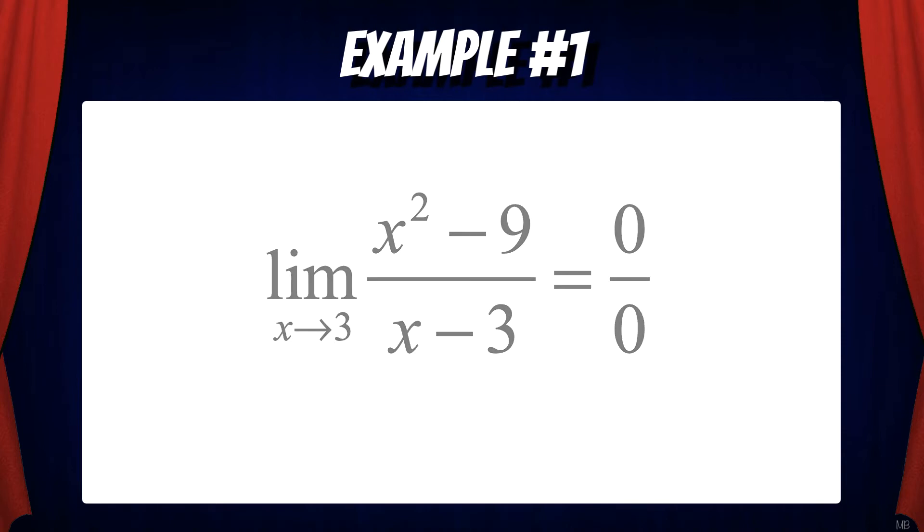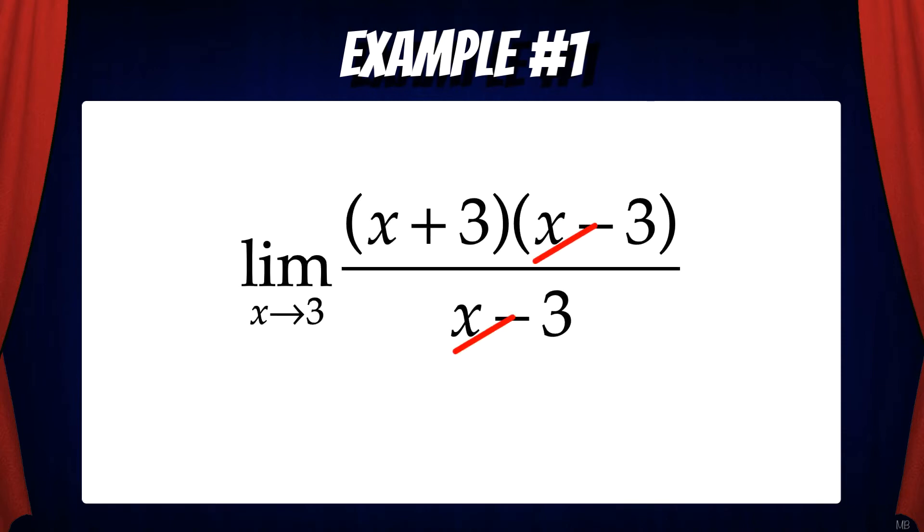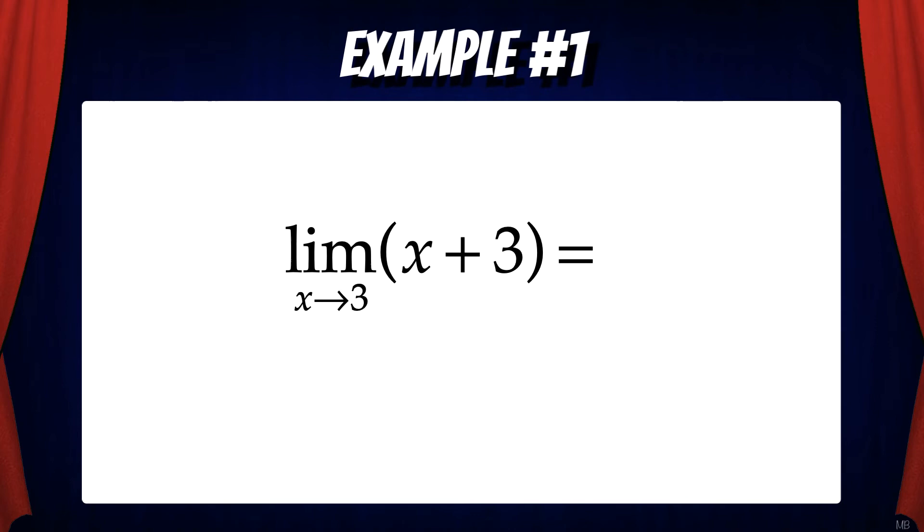That means we have algebra to do. So let's factor the numerator and cancel out the x minus 3's in the numerator and denominator. And that leaves us with the limit as x goes to 3 of x plus 3. Now we can solve. We can plug in 3 and we get 6. In other words f prime of 3 equals 6. The derivative of x squared at x equals 3 equals 6.